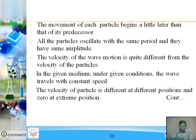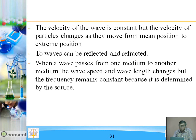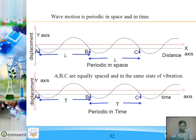The velocity of wave motion is quite different from the velocity of the particles. In a given medium under given conditions, the wave travels with constant speed. The velocity of the particle is different at different positions and zero at extreme positions, whereas the velocity of the wave is constant. When a wave passes from one medium to another, the wave speed and wavelength change, but the frequency remains constant because it is determined by the source — that is, by the vibrator.